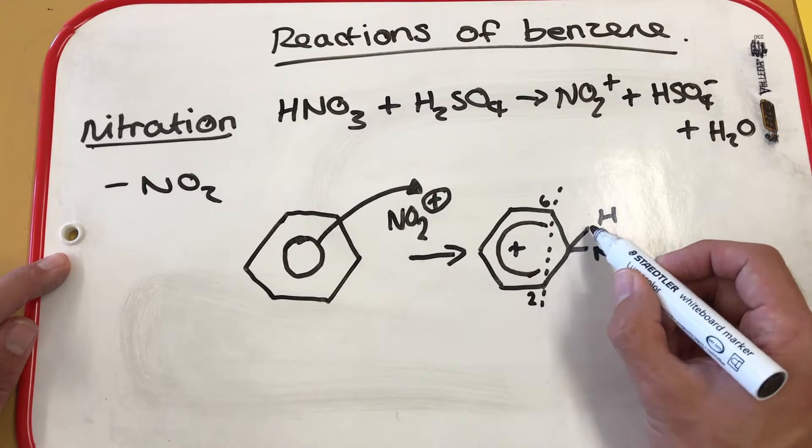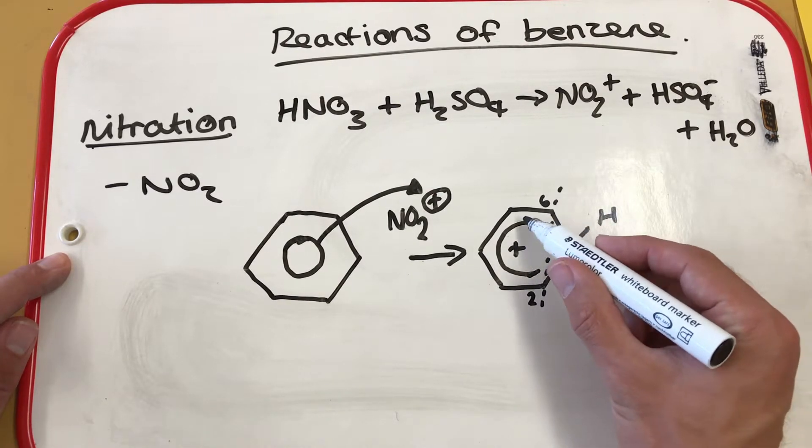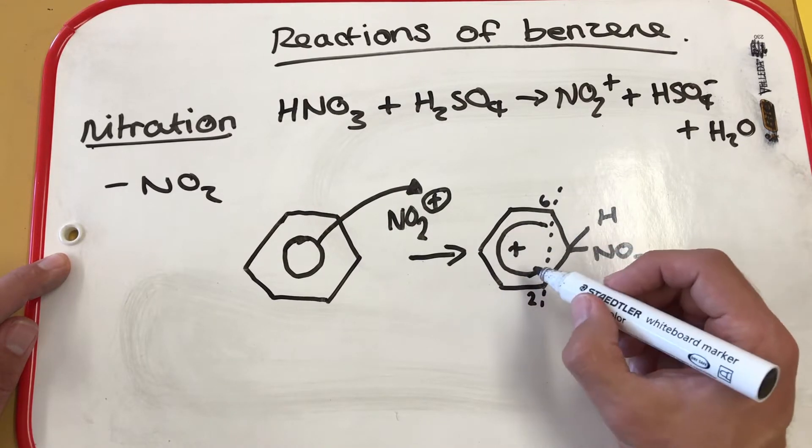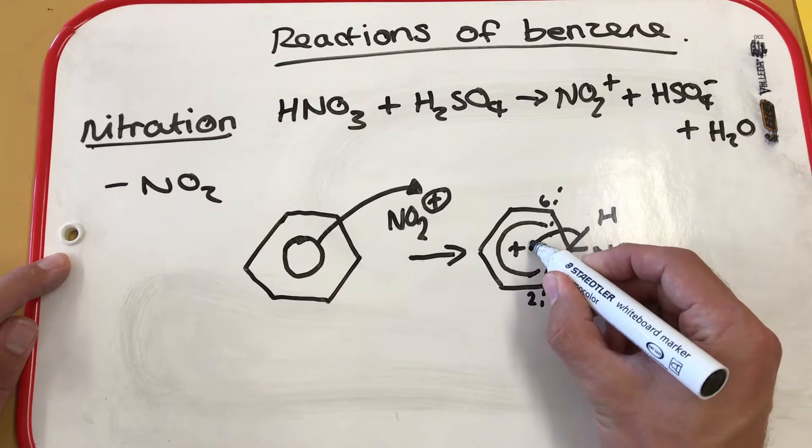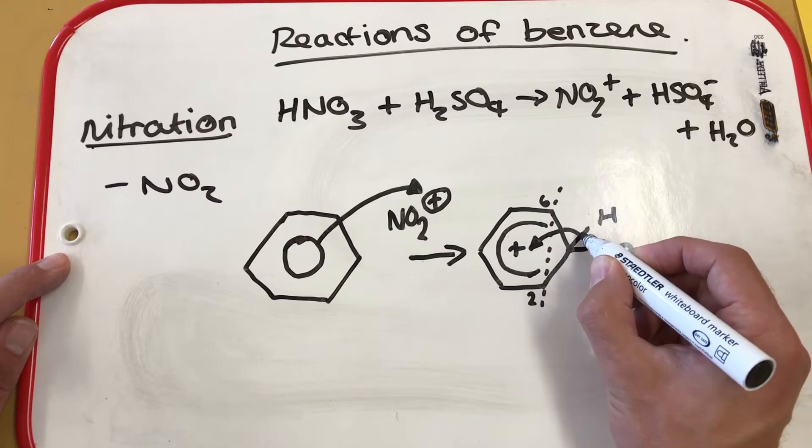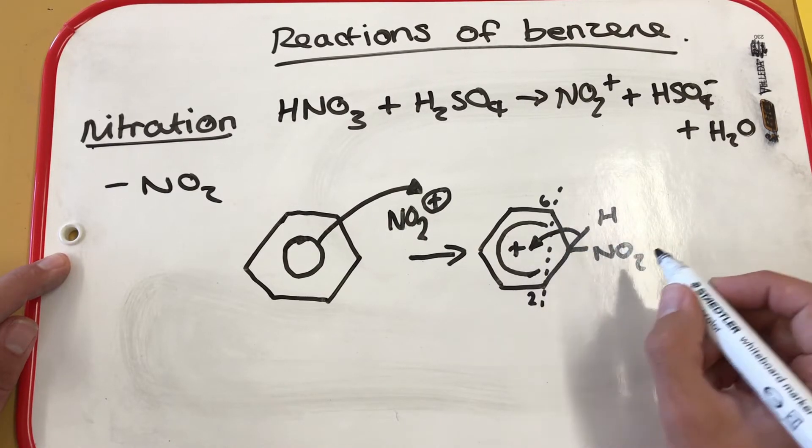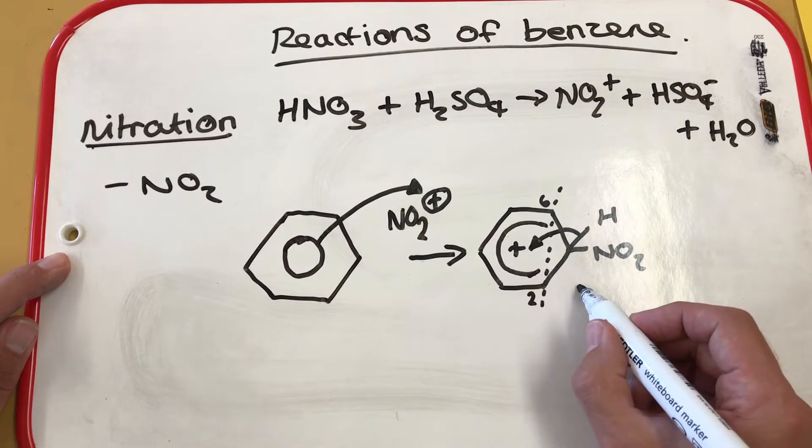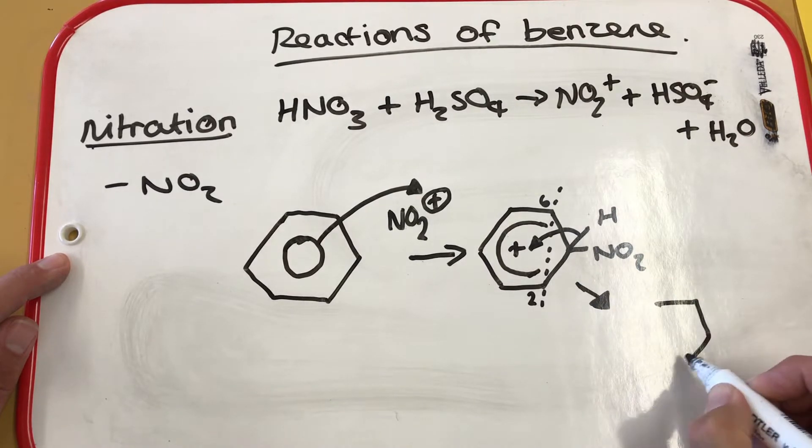Now, this won't last for very long because the ring is going to reform to restabilise the benzene molecule. The pair of electrons from the bond between the hydrogen here and the carbon, this pair of electrons moves in to reform, it delocalises in to reform this aromatic ring. The product is nitrobenzene.